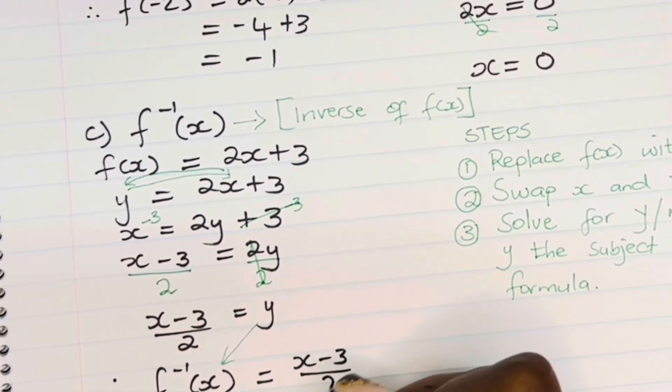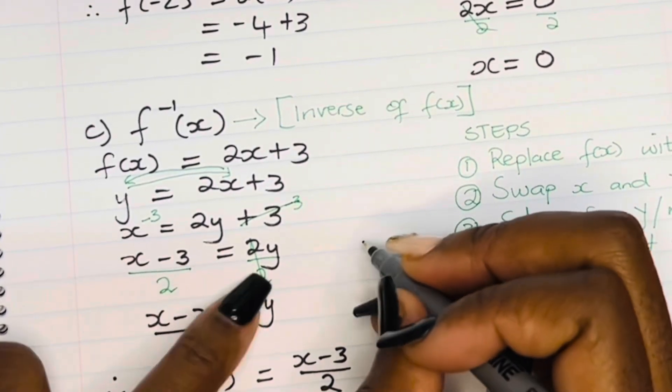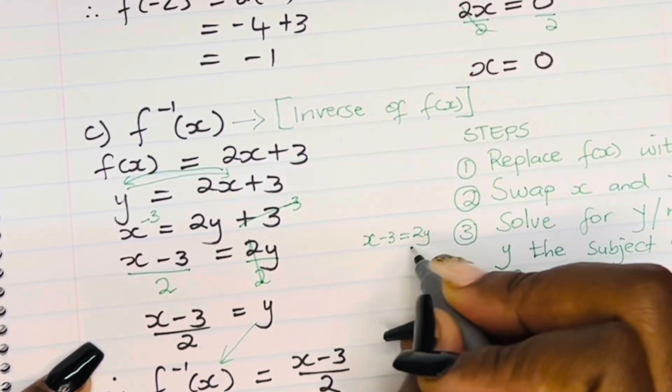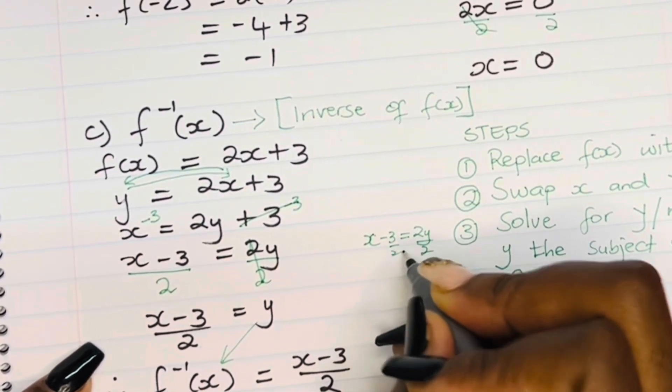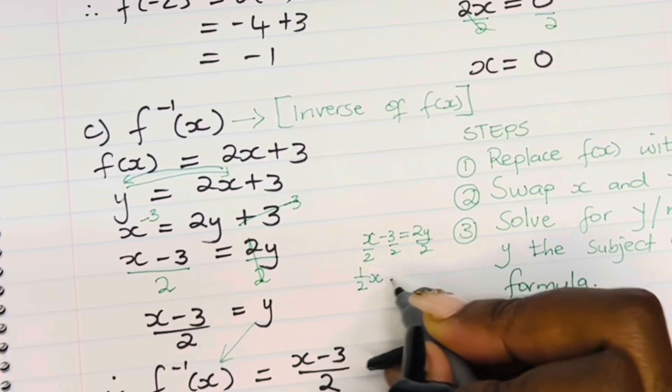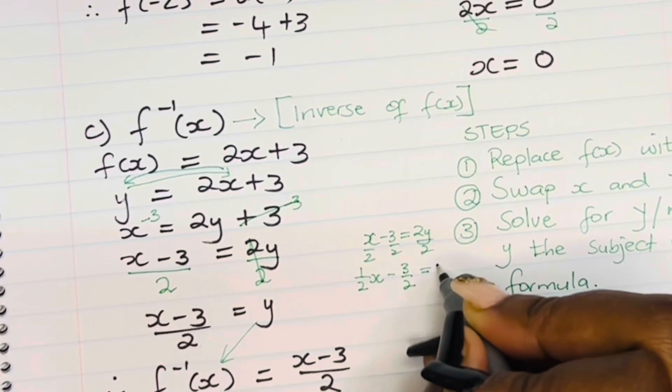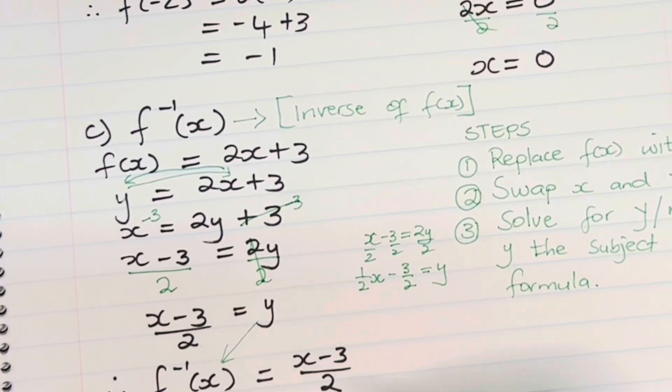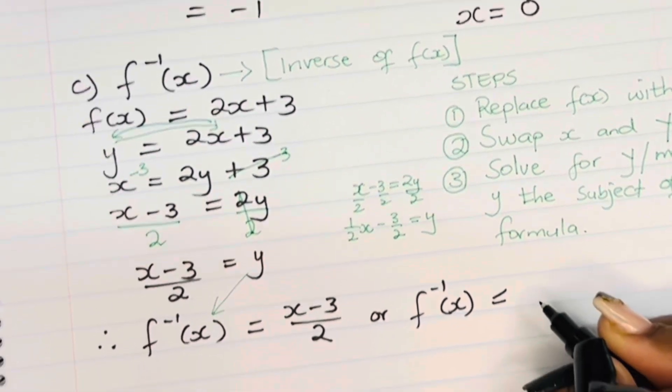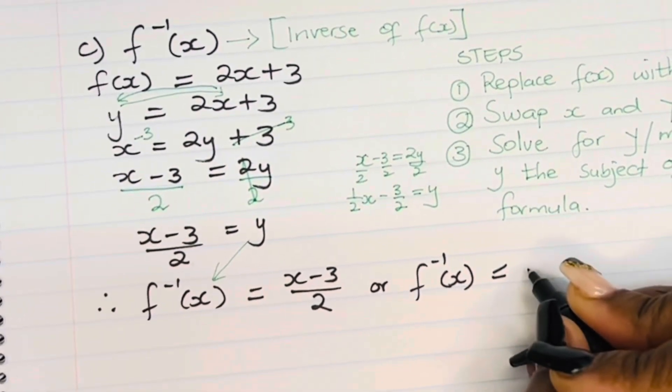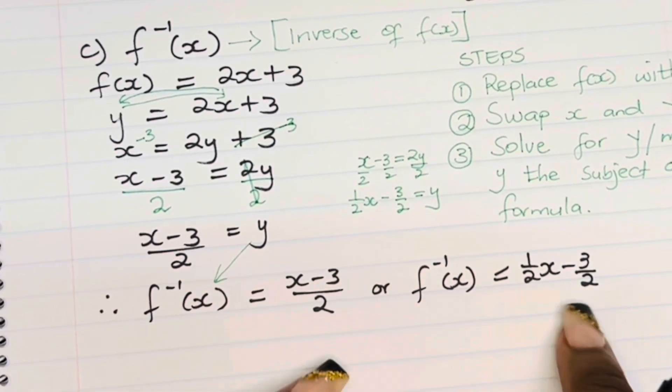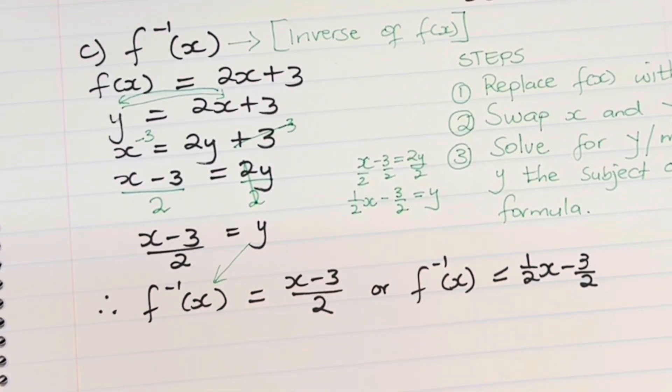Therefore, our inverse of f of x is equal to x minus 3 over 2. If you go back to where we had 2y alone on its side, we could have decided to divide each term by 2. And x over 2 means the same thing as 1 over 2x minus, of course, 3 over 2 equal to y. And that is the same as x minus 3 over 2. So if you write your inverse as the inverse of f of x equal to x minus 3 over 2, and if another person writes the inverse is equal to 1 half x minus 3 over 2, both of you are correct. Both of you will get your full marks.